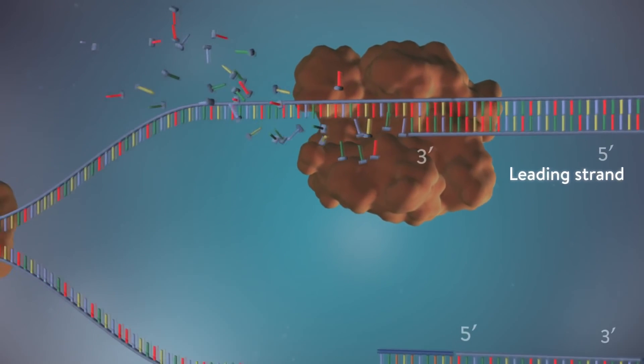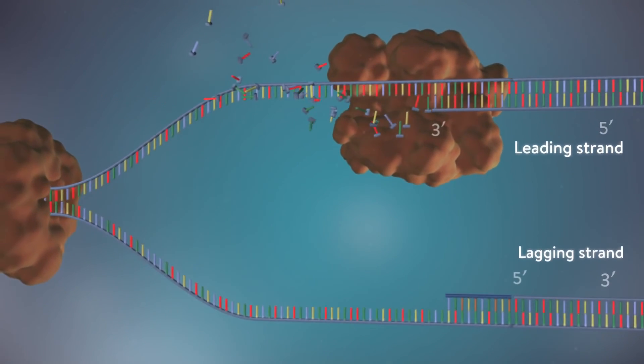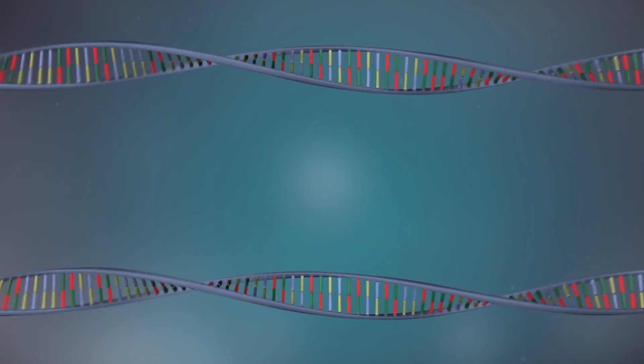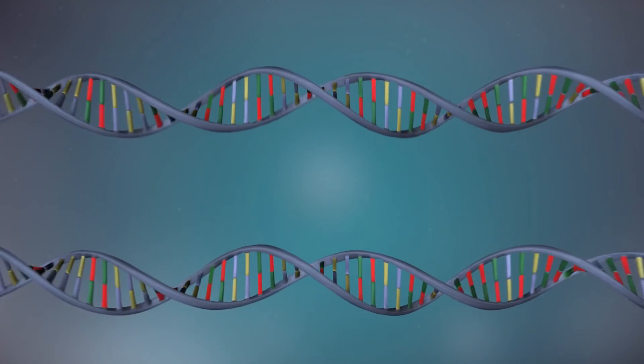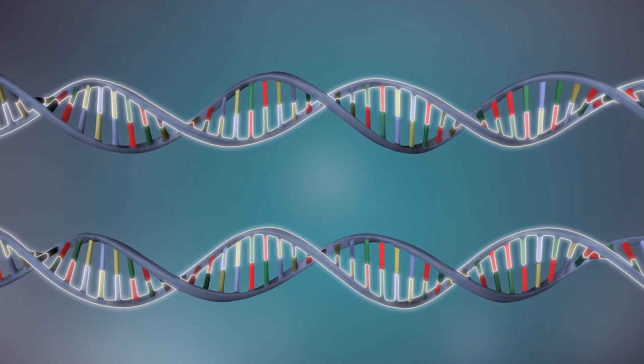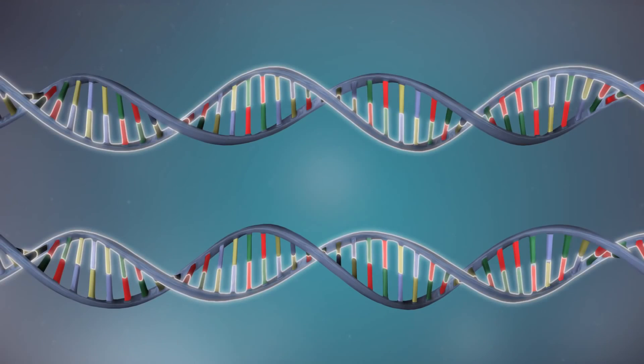The other strand, the lagging strand, cannot be made in this continuous way. DNA replication is described as semi-conservative because each DNA molecule is made up of one old, conserved strand of DNA and one new one.